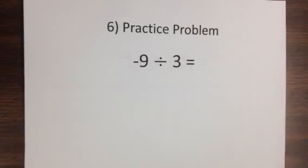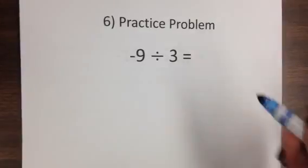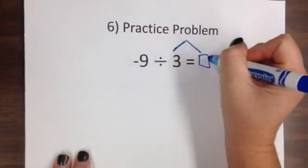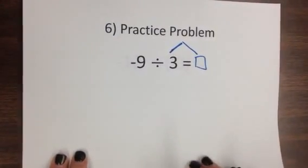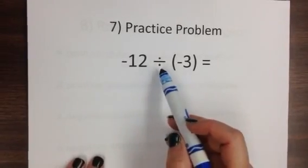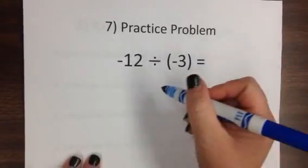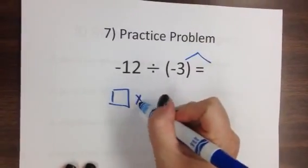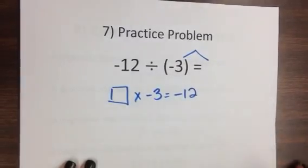Okay, number six, negative nine divided by three equals what? That's the same thing. It's three, this number times this number here would give me negative nine. So three times what is negative nine? Number seven, pause your video again. Negative 12 divided by negative three. Again, you just want to know what that answer is. So I would say these two multiply together. So what number times negative three gives me negative 12? Solve that number right there.